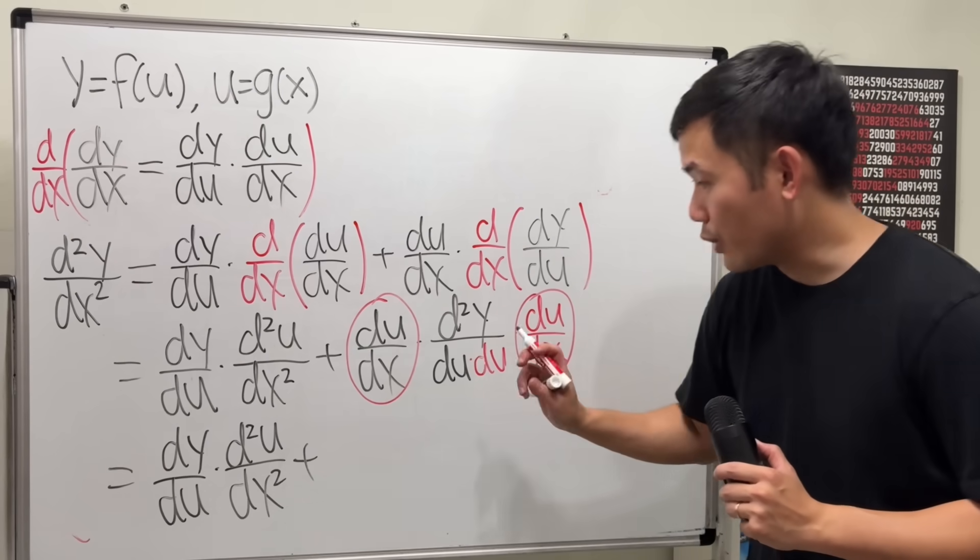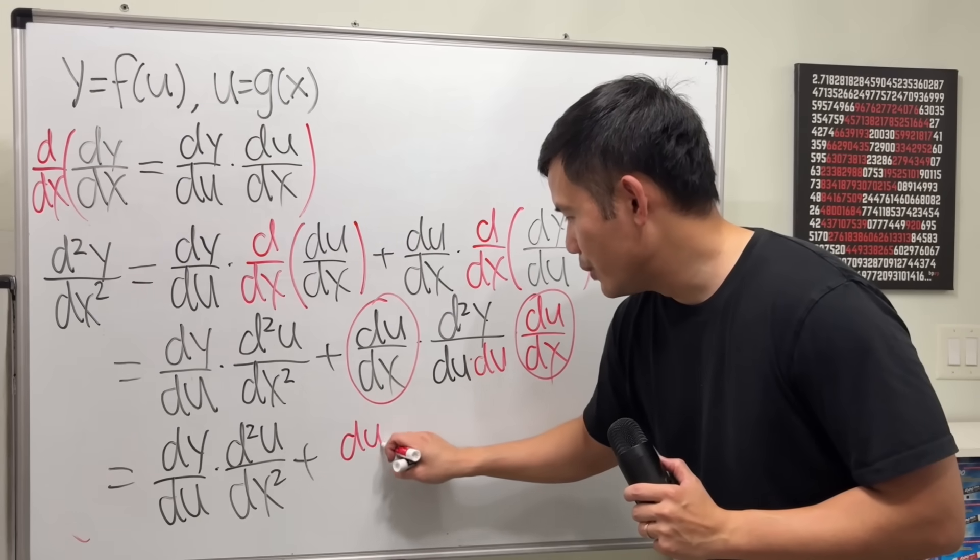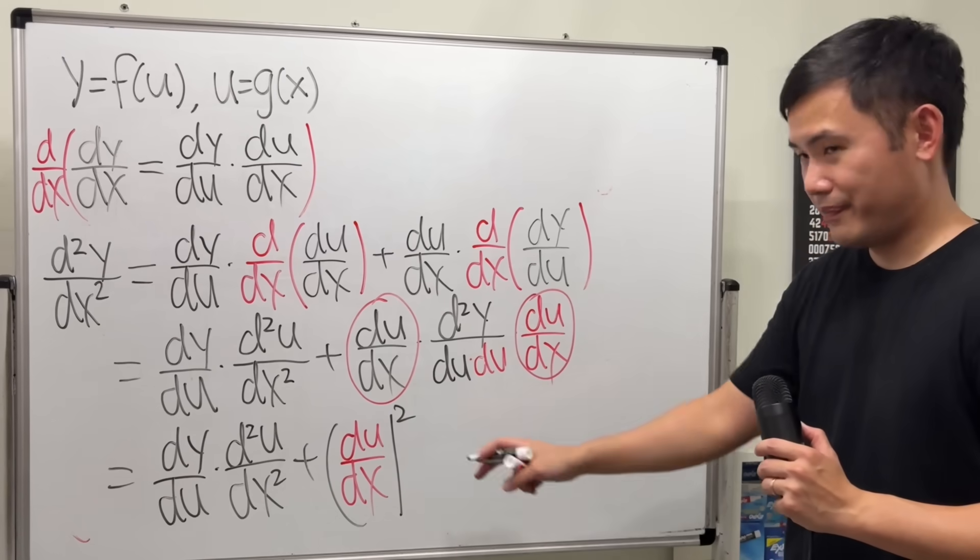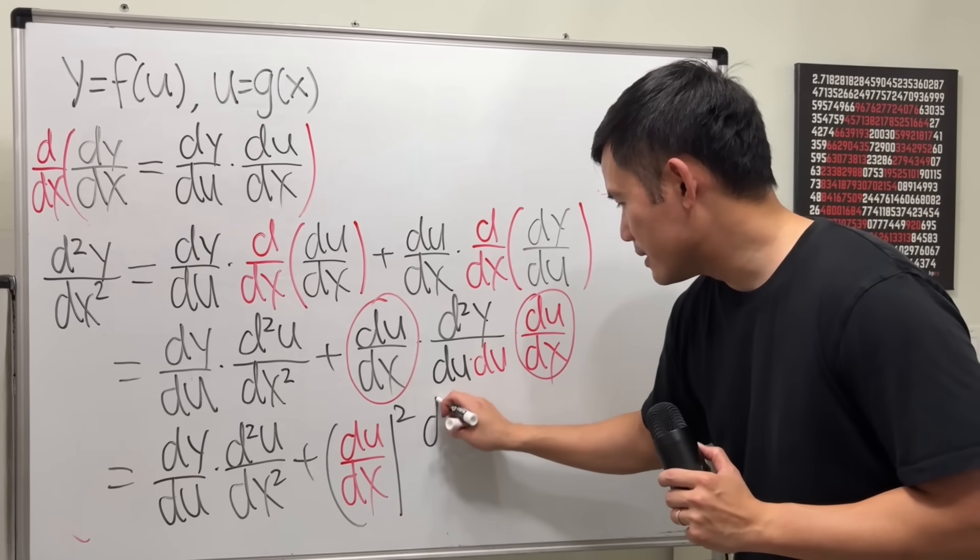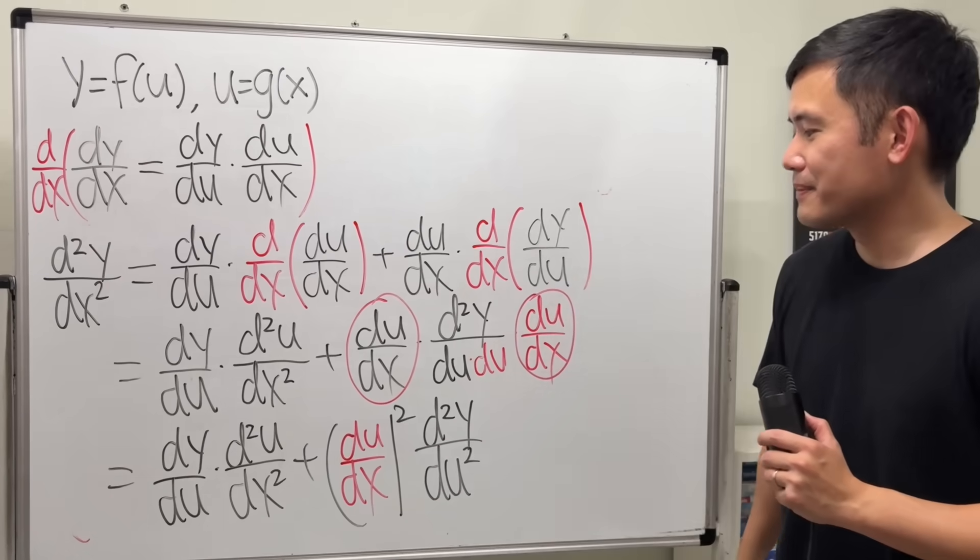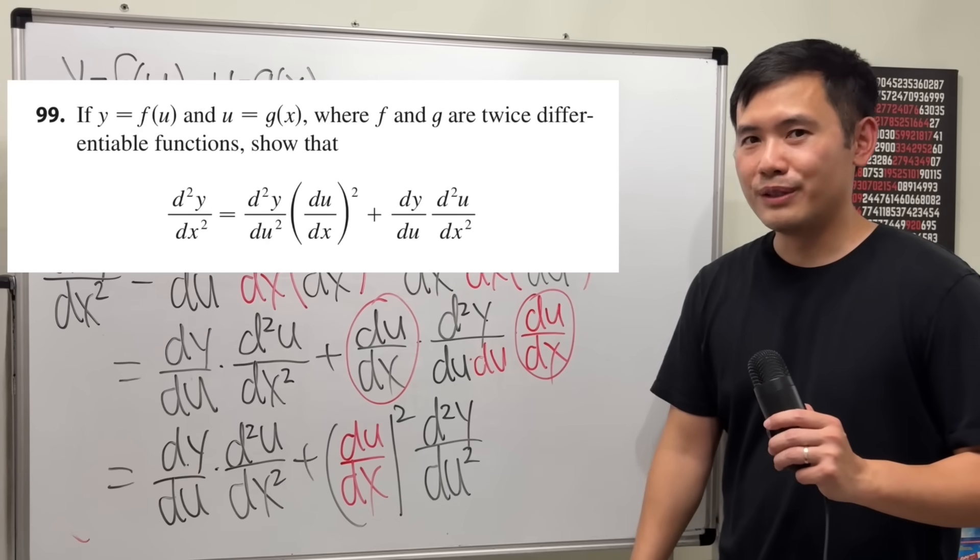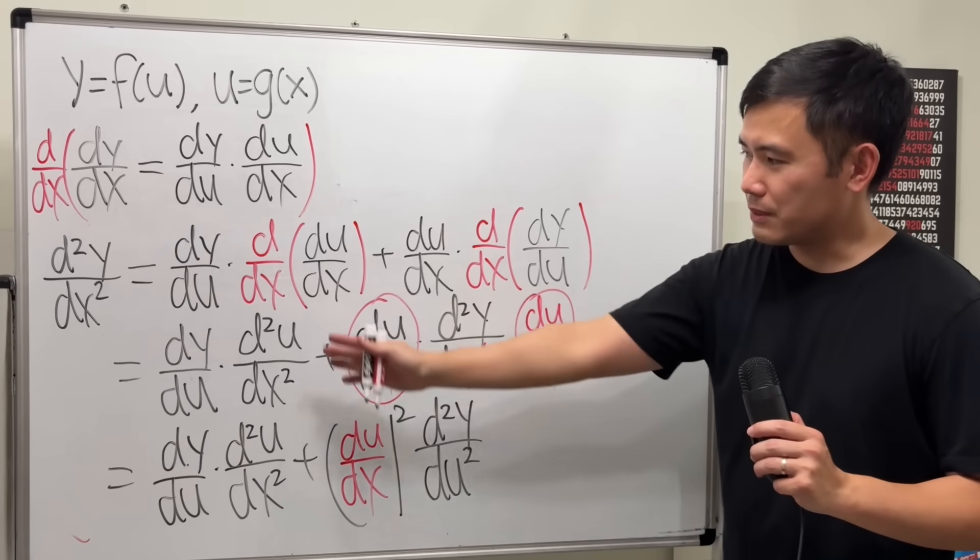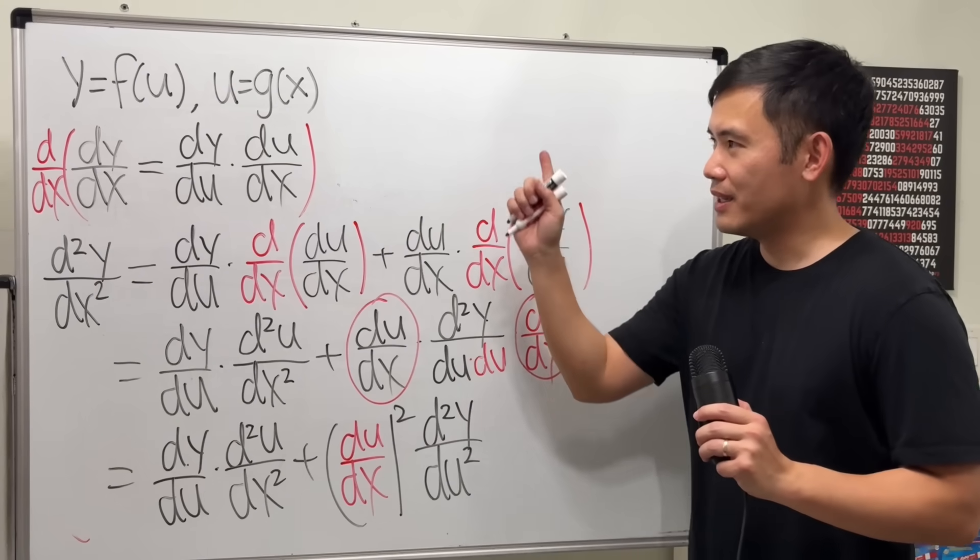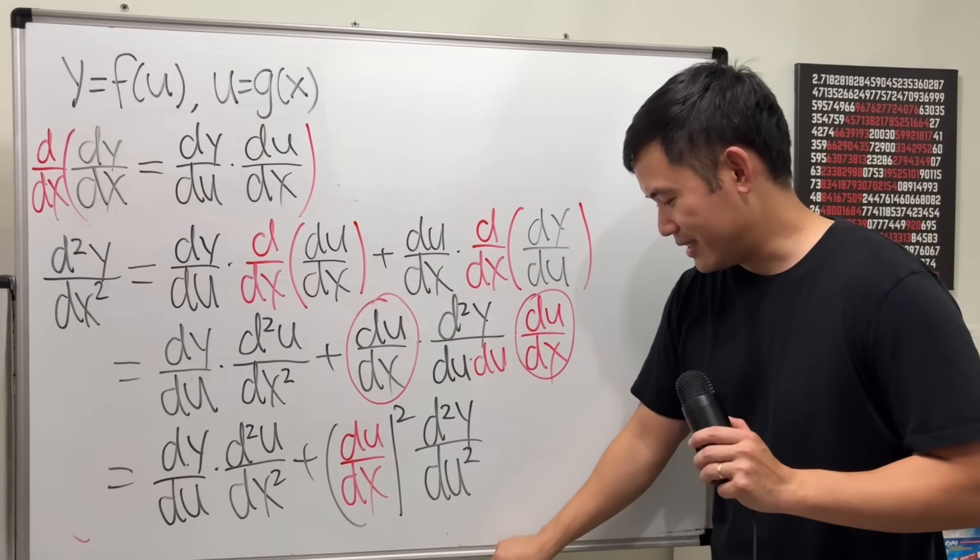This and that are the same. We can write it as du dx, and then square. Right here, we can write it as d2y du2, like that. And that's the answer that they have as well. Now, in order for me to explain this better, especially this part, let's use the prime notation. You'll see it will be better.